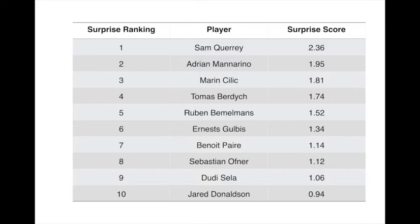Adrian Mannarino lands the second spot. Mannarino reached the round of 16 and had big wins over Feliciano Lopez and Gael Monfils, which both earned him plus 0.7 to his surprise score. Marin Cilic — actually the finalist this year — takes the third spot. Getting to the final as the seventh seed turned out to be a pretty big deal. Looking over Cilic's results, his biggest win was in the quarterfinal against Gilles Muller, where he earned his highest positive surprise result of plus 0.4.